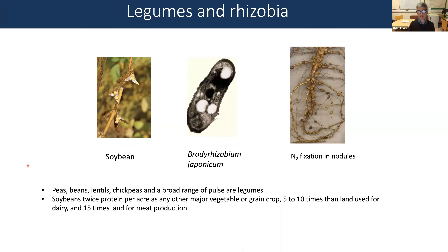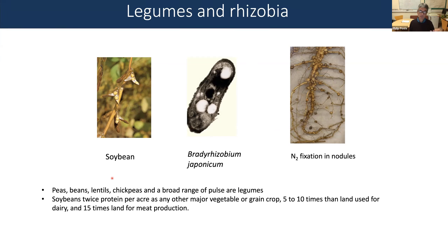A specific example is soybean, which is infected by a particular rhizobium called Bradyrhizobium japonicum. In soybean the nodules are about the size of a pea — around five millimeters across. Legumes are actually the third largest family of flowering plants: peas, beans, lentils, chickpeas, a very broad range of pulses are all legumes, all of which will have nitrogen-fixing bacteria inside their nodules.